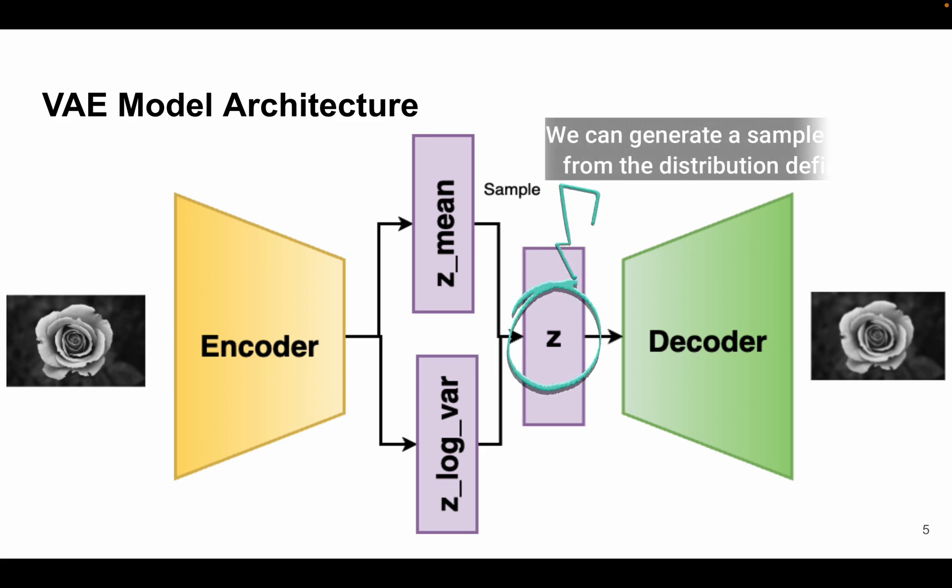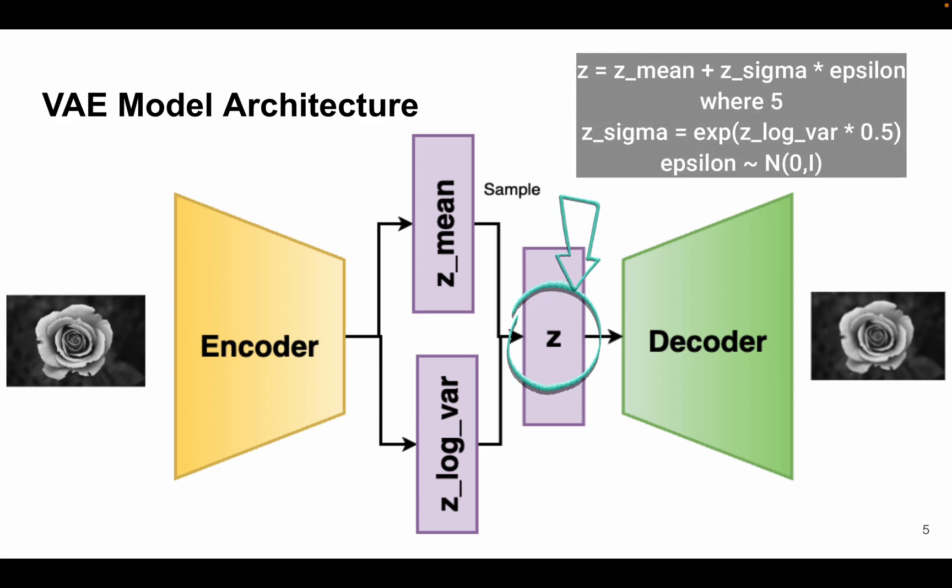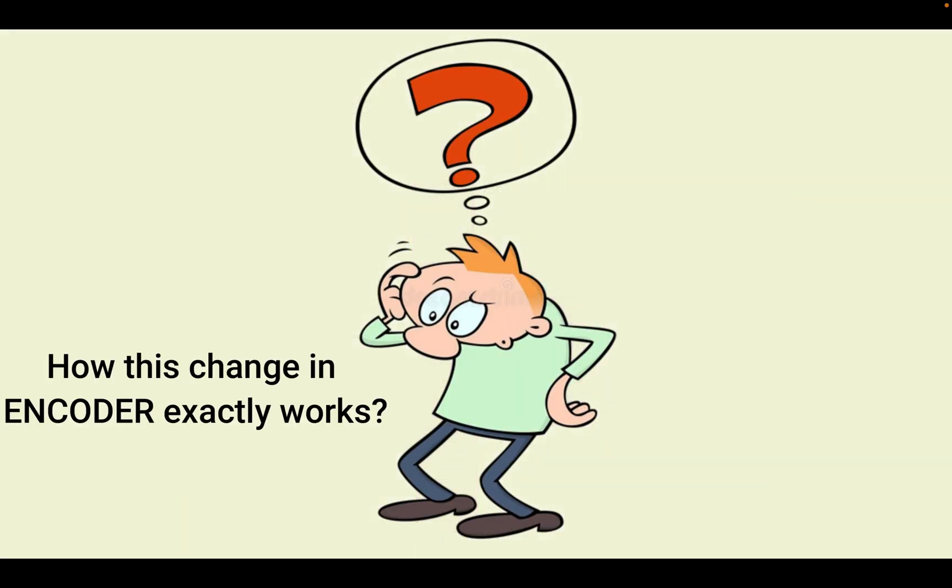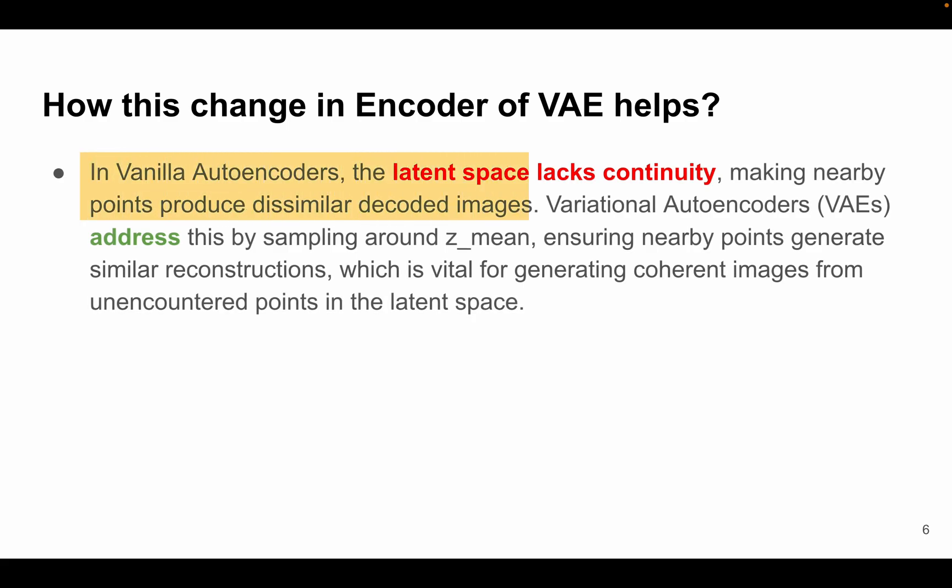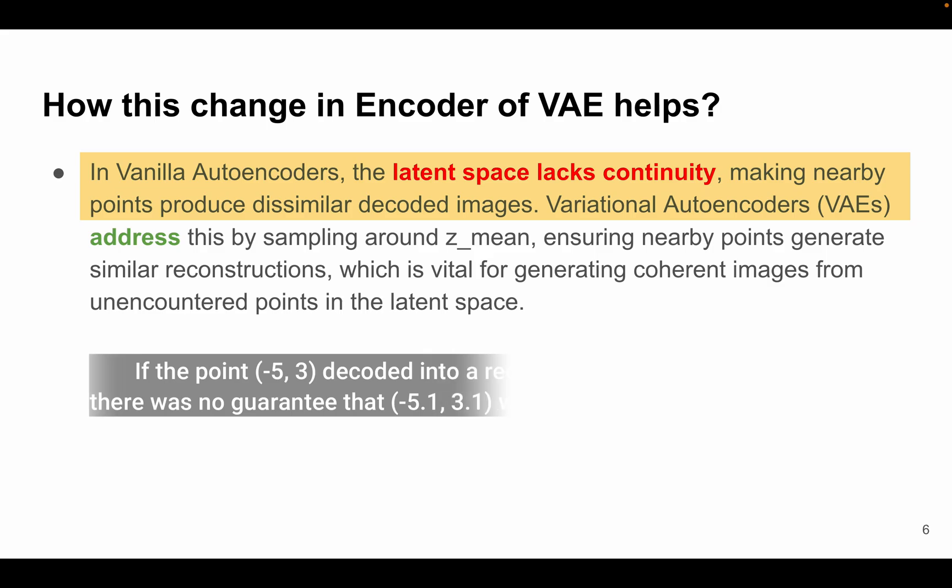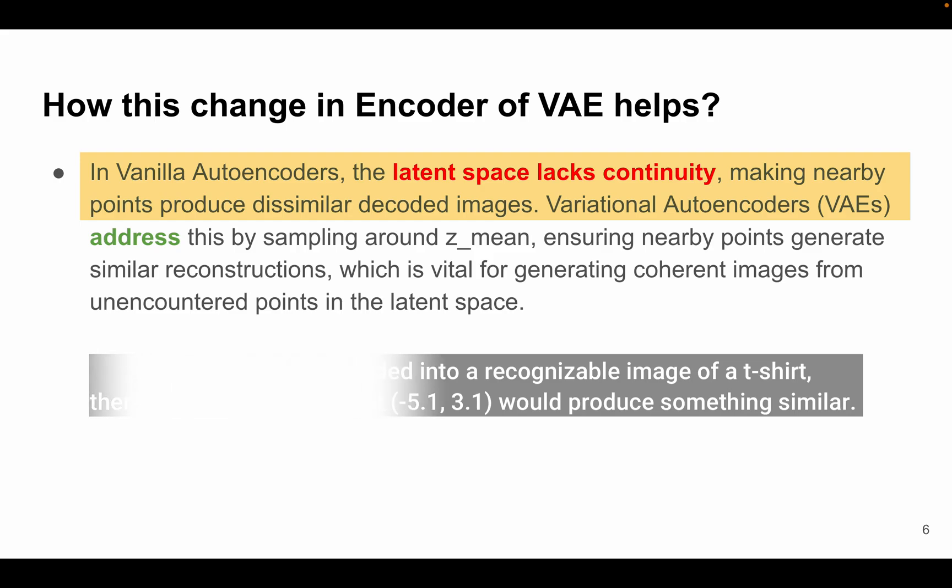And from this we can generate a sample point known as z from the distribution defined by this equation like z = z_mean + z_sigma × epsilon. But how does this change in the encoder work? Why are we using z_log_var and z_mean? We will see it now. In vanilla autoencoders we observed that the latent space was not continuous. For instance, if a point (-5, 3), just for an example, decoded into a recognizable image of a t-shirt, then there is no guarantee that (-5.1, 3.1) would produce something similar.